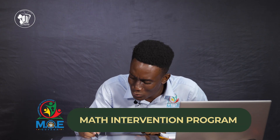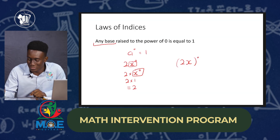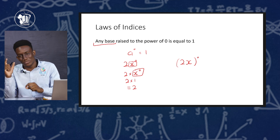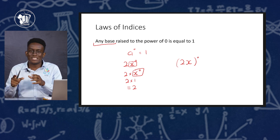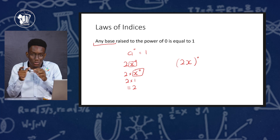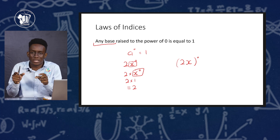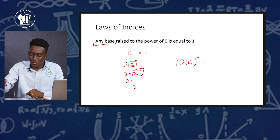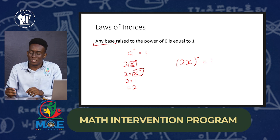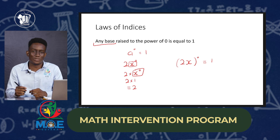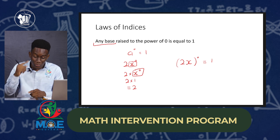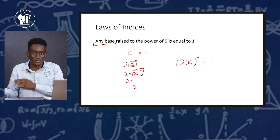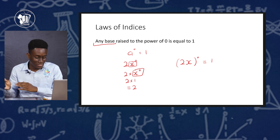Now let's contrast that with 2x all raised to the power of 0 — where the entire 2x is inside brackets and raised to the 0 power. In this case the base is the entire 2x, so the whole expression equals 1. This is very different from 2x to the 0 without brackets. So just be careful when applying this law.